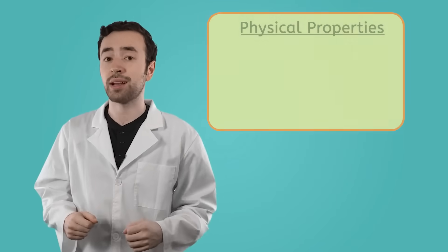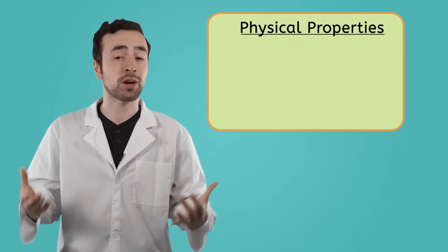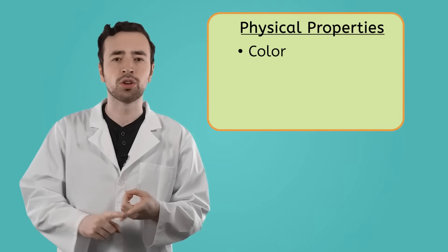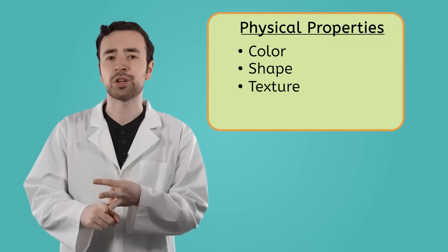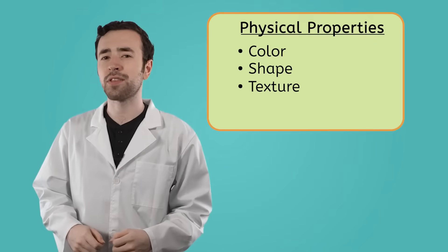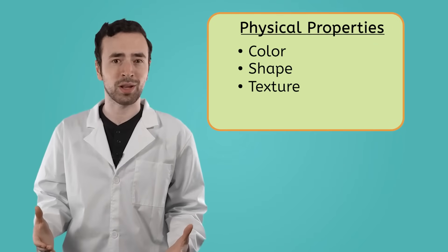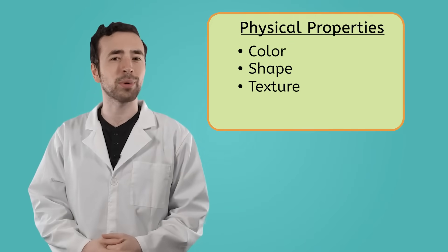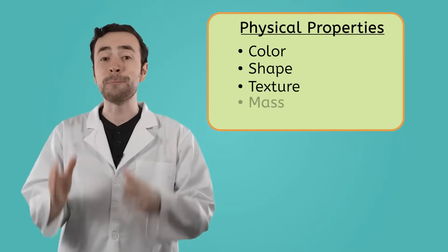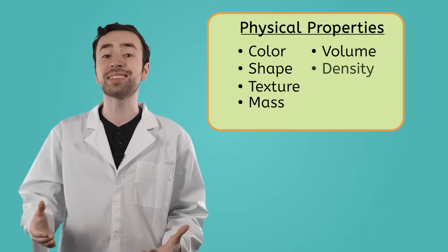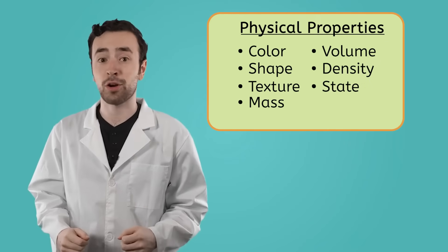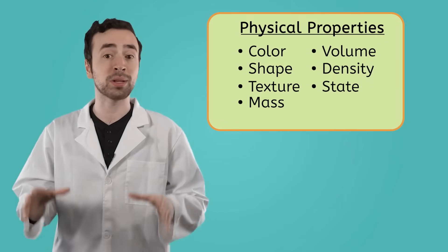So you might have noticed that a lot of the physical properties we've talked about so far are things like color, shape, texture. But did you know that a lot of the things we've learned about in this unit are also physical properties? Yup! Mass, volume, density, and state of matter are all physical properties as well.